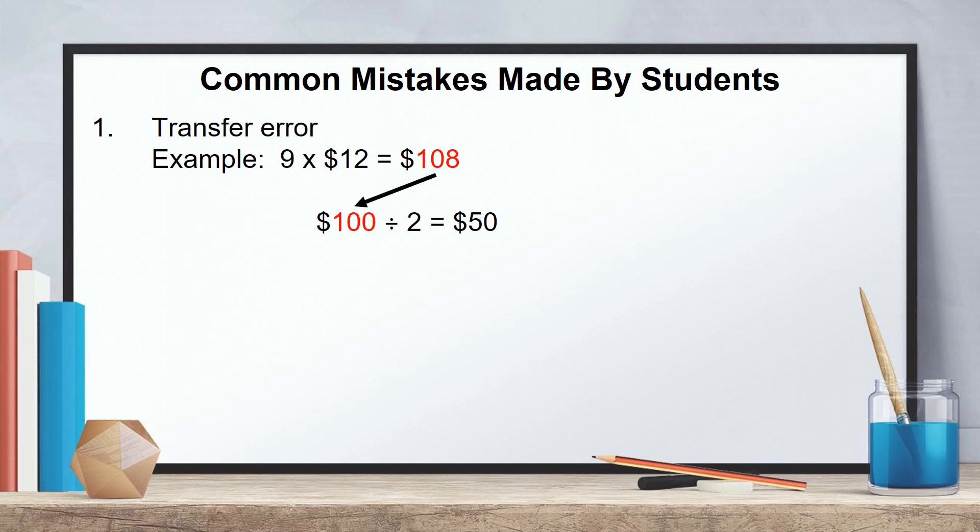Now I'm going to share some of the common mistakes made by the students. Number one is transfer error. You notice in this example, actually in the first equation, the calculation is correct, but then the student transfers the value wrongly. So this will result in inaccuracy of the final answer.